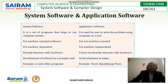The differences between system software and application software: system software is a set of programs that help to run computer systems — it makes the computer work. But application software is used by the user to solve a problem using the computer as a tool. Next difference: system software is machine-oriented software — for a 32-bit processor, the operating system should be 32-bit; for 64-bit, the system software should be 64-bit. But application software is not machine-oriented. System software is machine-dependent, whereas application software is machine-independent — it is not machine-dependent.